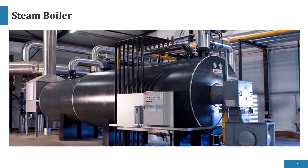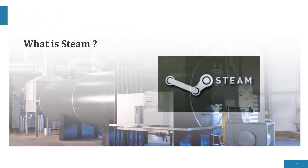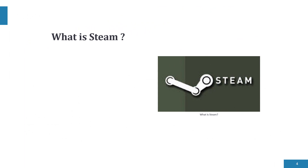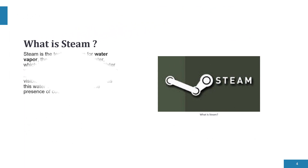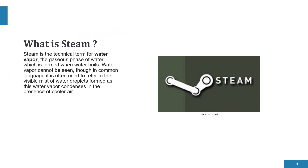A steam boiler is an enclosed vessel that provides a means for combustion and transfers heat to water until it becomes hot water or steam. The hot water or steam under pressure is then usable for transferring heat to a process. Steam is the technical term for water vapor — the gaseous phase of water — which is formed when water boils.